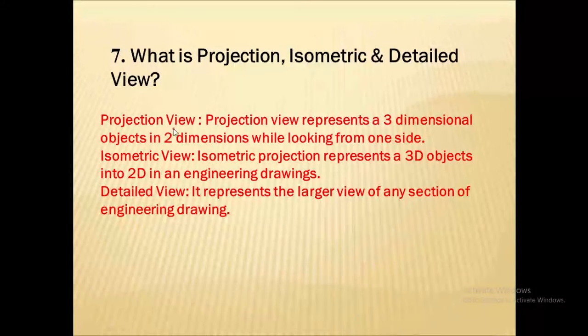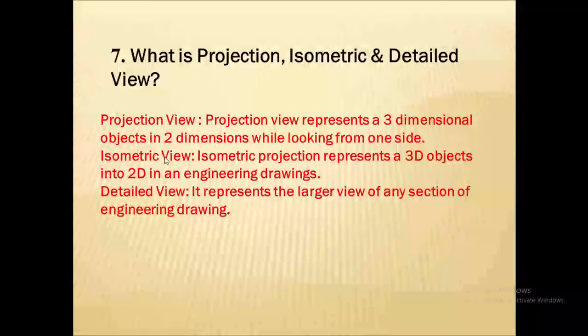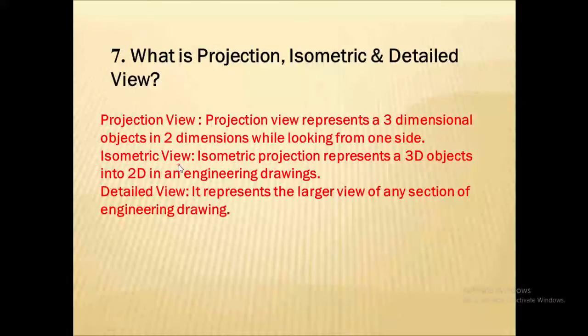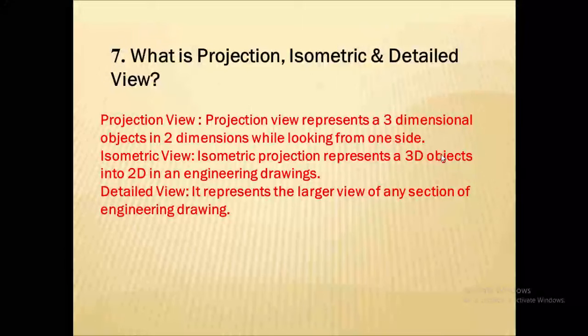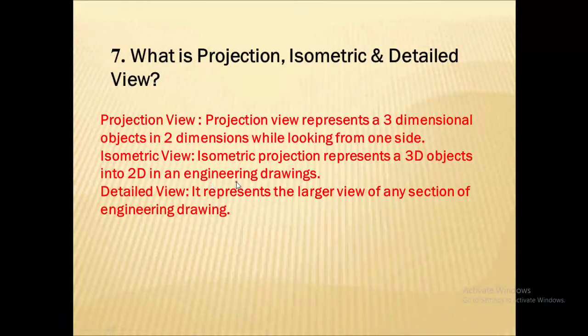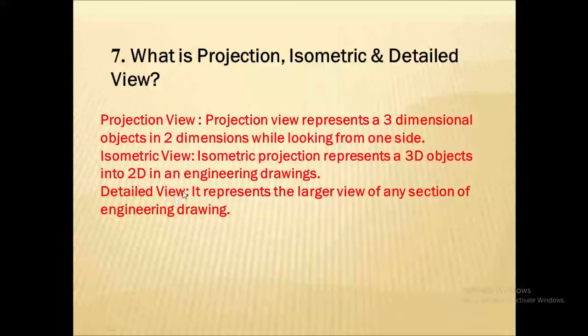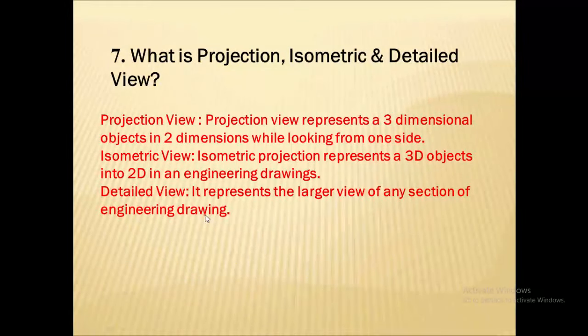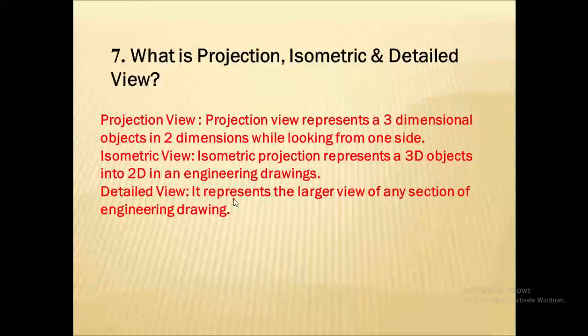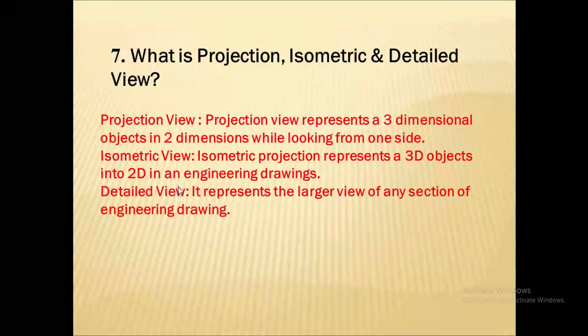What is isometric view? Isometric view represents a 3D object. Isometric view is nothing but a 3D object into 2D in an engineering drawing. What is detailed view? This is also very important in drawing. It represents the larger view of any section of engineering drawing. If some sections are complex, they are shown by a larger view. That is nothing but the detailed view in a drawing.